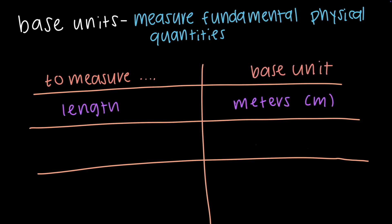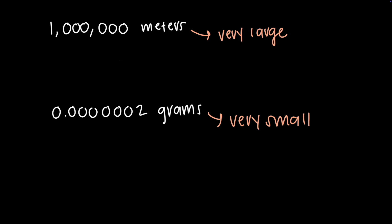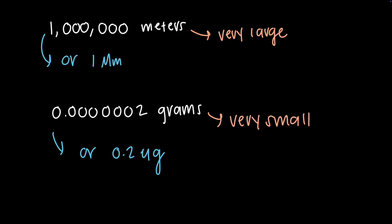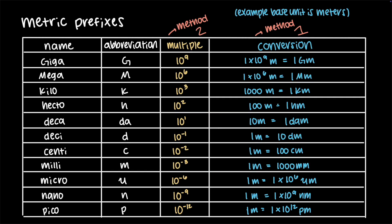To measure length, the base unit is meters. To measure mass, the base unit is grams. To measure volume, the base unit is liters. However, in real-world chemistry, the values we measure don't always fall neatly into whole meters, grams, or liters — sometimes they are incredibly large or extremely small. When values become very large or very small, we can add prefixes to these base units to make values easier to read, write, and understand. For example, instead of writing that an atom is 0.00000000001 meters wide, we can write that an atom is 0.1 nm wide. The prefixes that are important to memorize are listed in the table, and we can add these prefixes to any base unit.